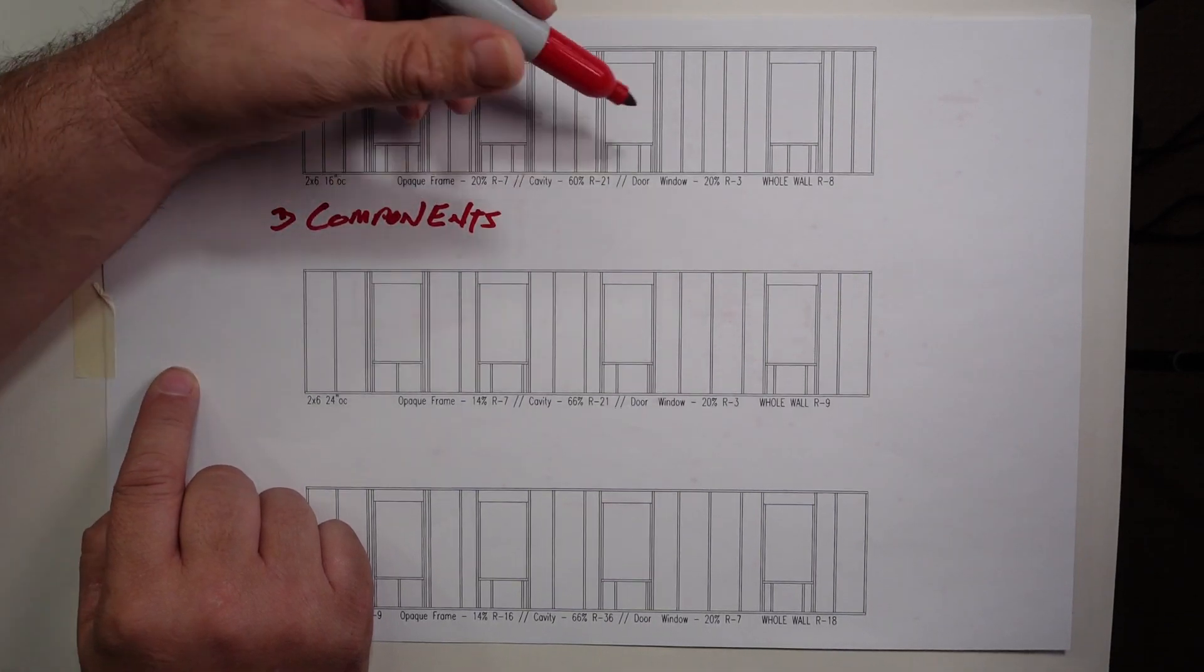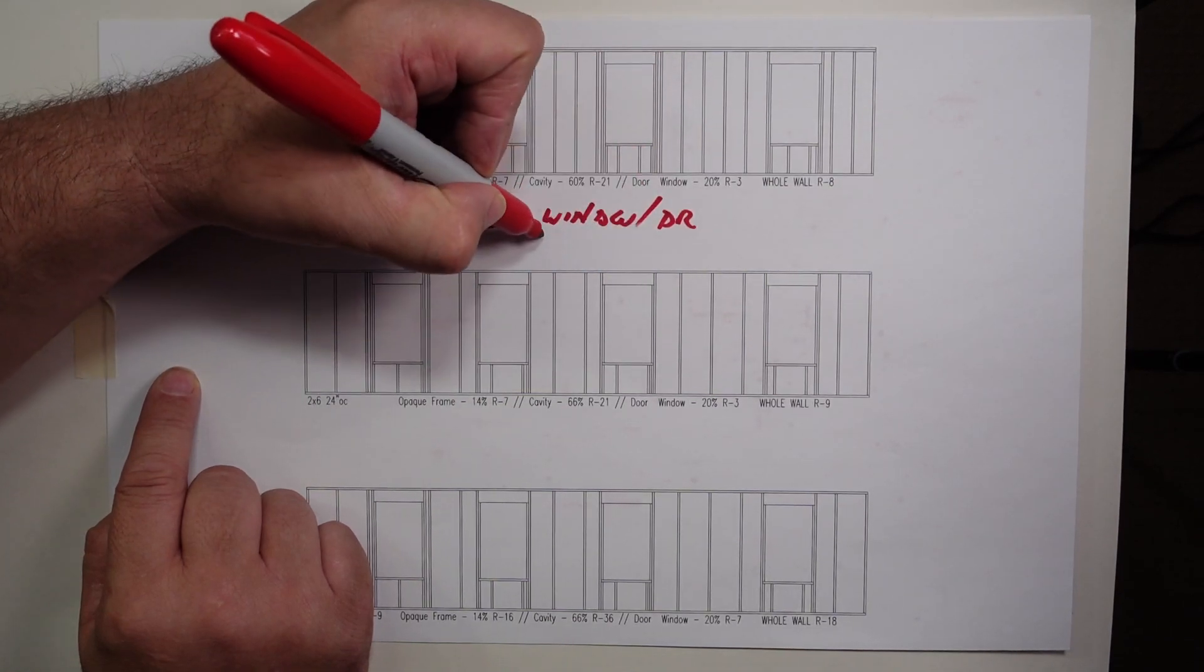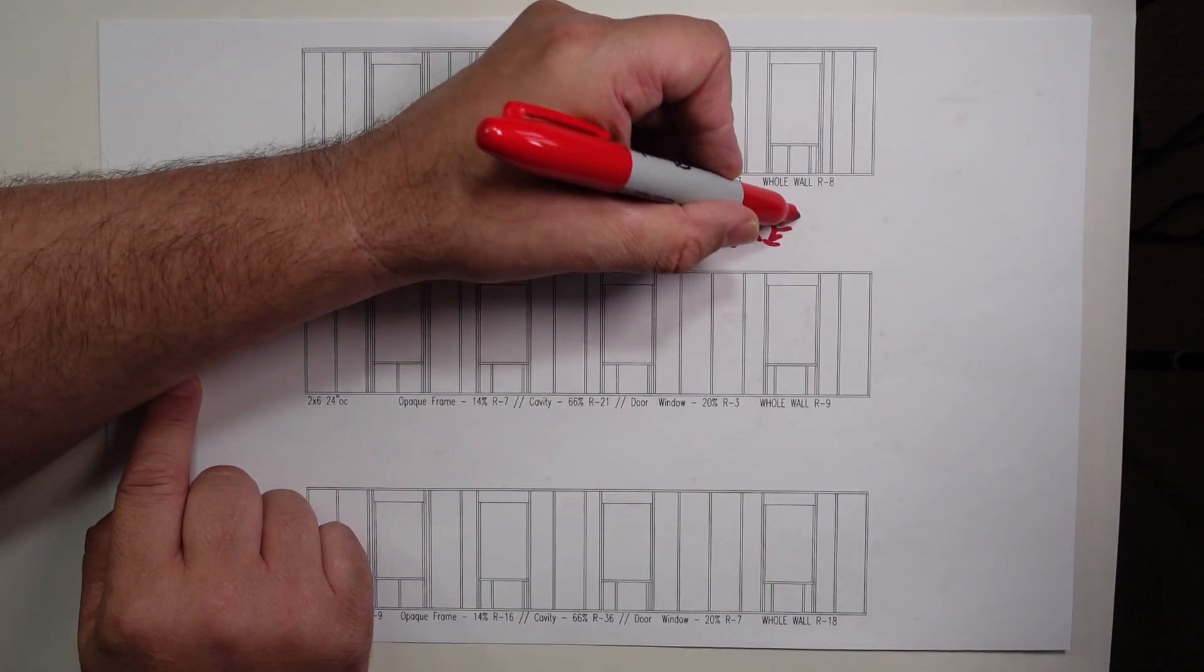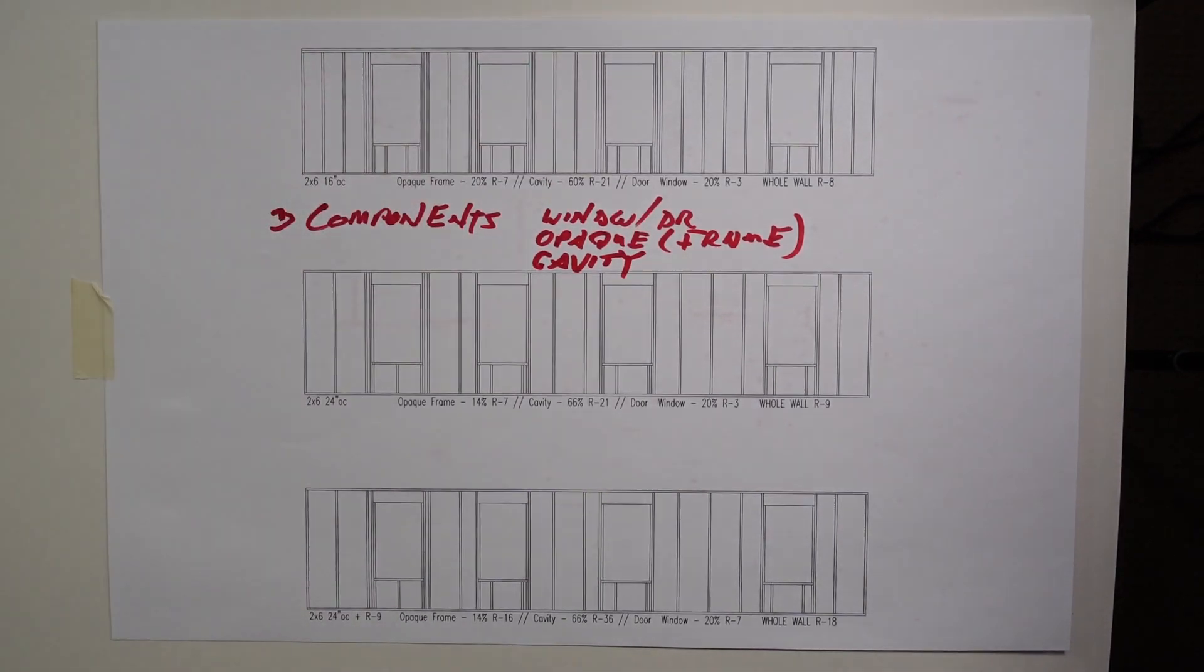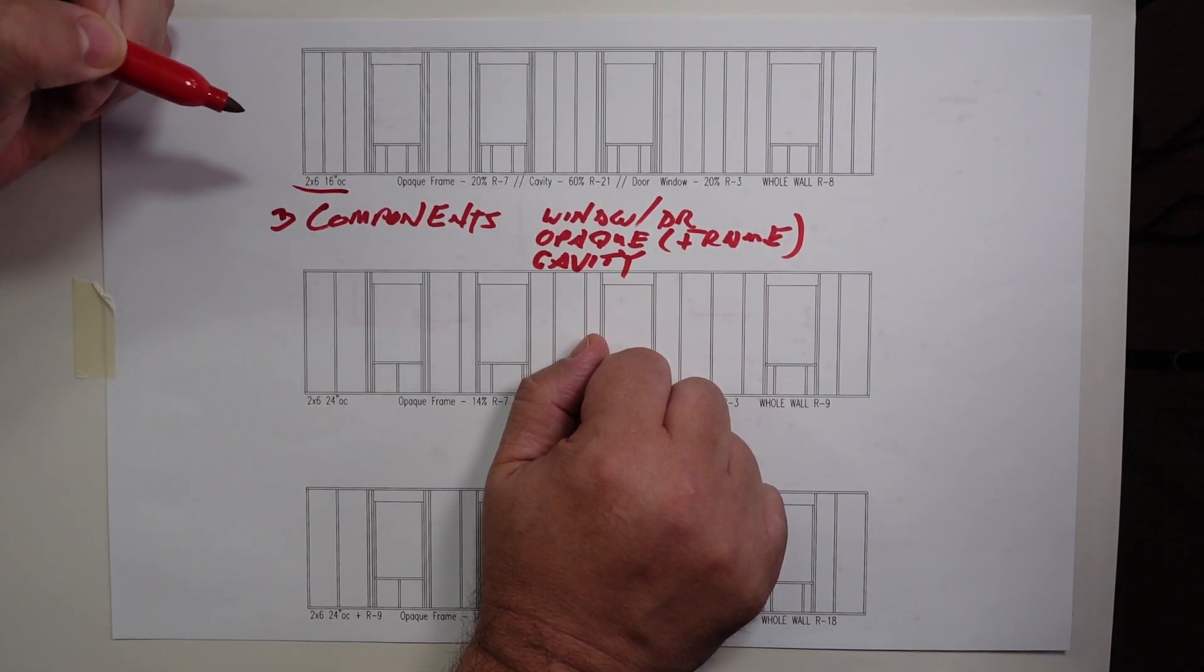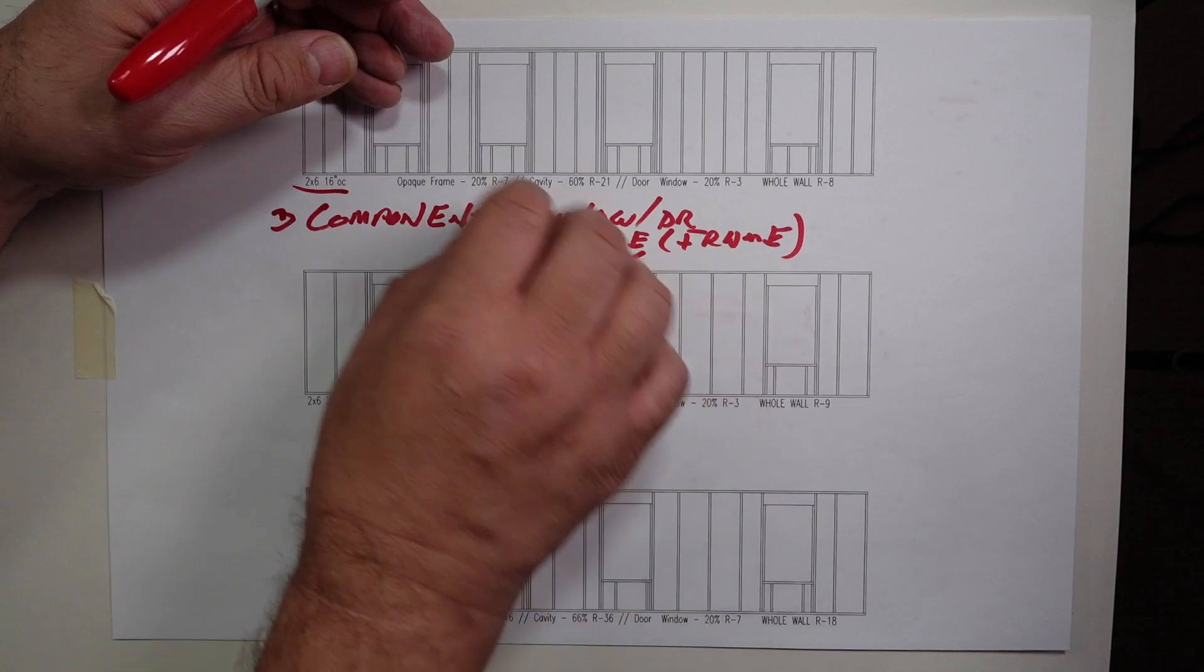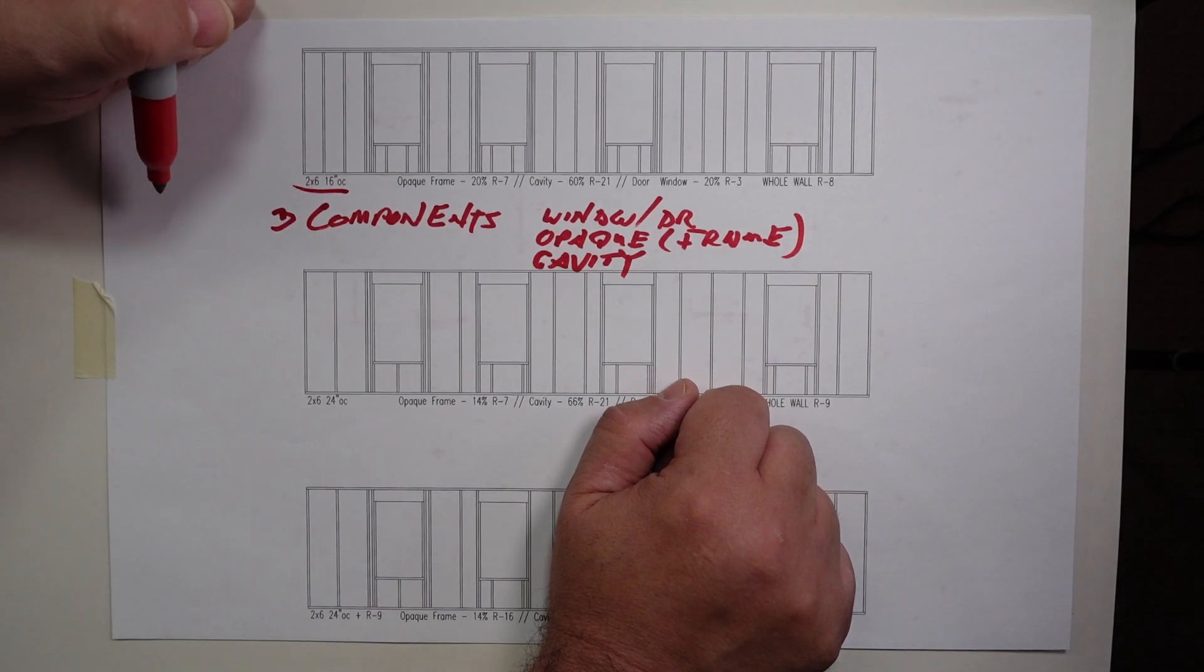There's basically three components to a wall system. There are the window and door. There is what I call the opaque. And that is basically the frame. And then there is the cavity. And that's where we typically put insulation. But if we look at, and we have three walls here, this one here is a two by six, 16 inch on center wall. Has four openings in there. I know it's probably 48 feet long, something like that. That really doesn't matter. What matters is that these three are consistent and we compare apples to apples.